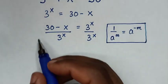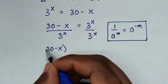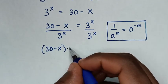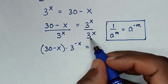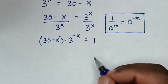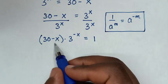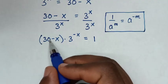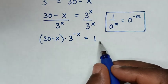So it will be 30 minus x bracket times 3 power of negative x is equal to 1, since 3 power of x divided by 3 power of x is 1. Then in the next step, from here we have power of negative x and here we have negative x. So we will multiply by 3 power of 30 on both sides.